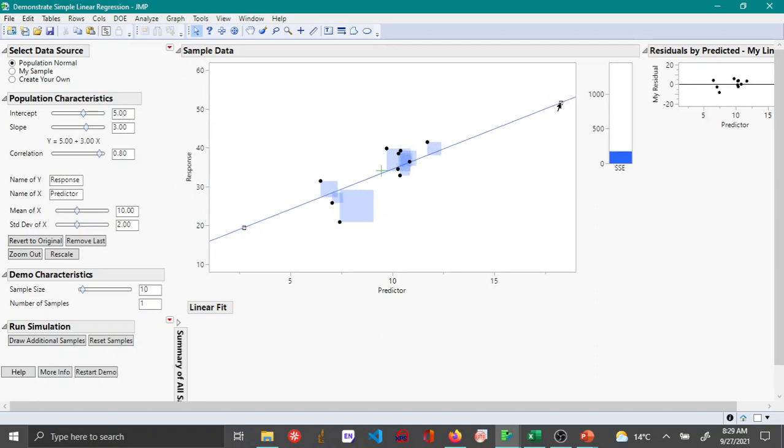If you try moving your cursor and dragging the line, you can try to minimize the areas occupied by these squares and try to minimize it. Then we can actually compare it with what the software does. This is what actually goes behind the scenes when you are trying to use the regression analysis in JMP.